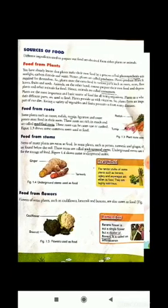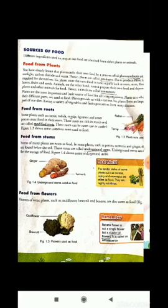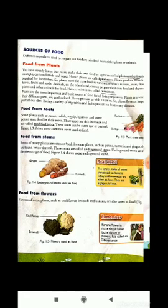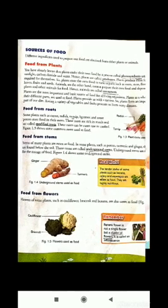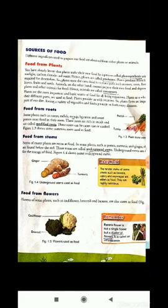First, we have food from roots. Some plants such as carrots, radish, turnip, beetroot, and sweet potatoes store food in their roots. These roots are rich in starch and are called modified roots. These roots can be eaten raw or cooked. Figure 1.3 shows some common roots used as food.